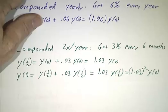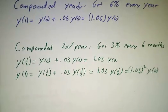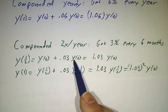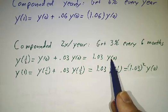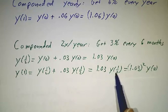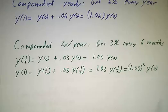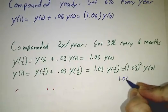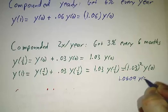If the bank compounds twice a year, that means every six months they give you 3%. So after six months, you wind up with 1.03 times what you started. After another six months, you wind up with 1.03 times that. In other words, 1.03 squared times y of zero, and that is 1.0609 times y of zero.